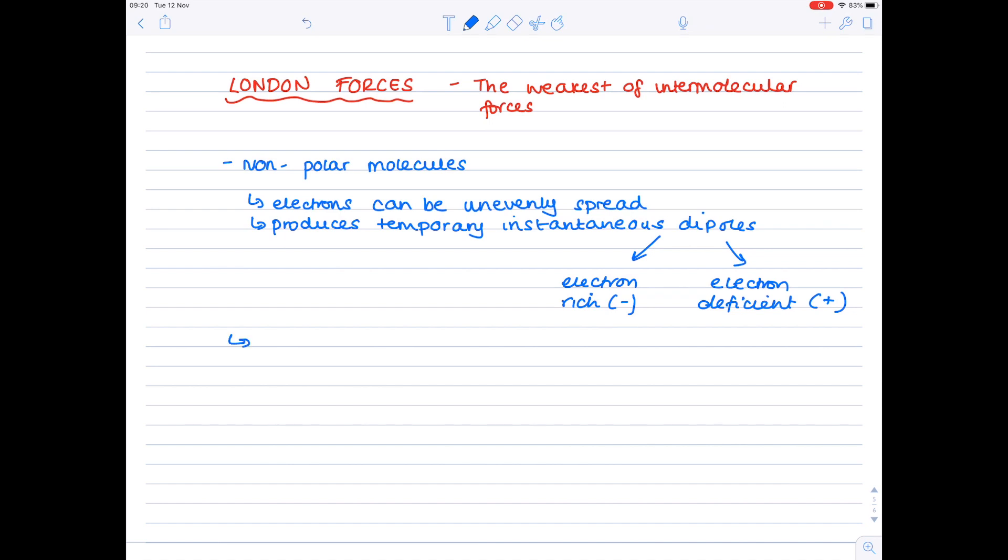Now this temporary instantaneous dipole can induce or cause another dipole to arise in a neighbouring particle, which means that you can have a weak attraction between the two particles, and that's what a London force really is.